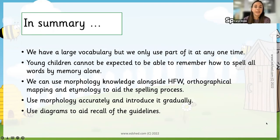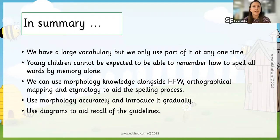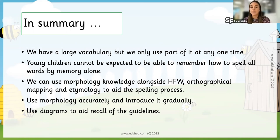In summary: we have a large vocabulary but only use part of it at any one time. Children cannot be expected to remember how to spell all words by memory alone, which is why teaching morphology knowledge alongside high-frequency words, orthographical mapping, and etymology will help the spelling process — and that all starts when children begin learning phonics and splitting words into their GPCs. Make sure we use morphology accurately, introduce it very gradually, and use diagrams to aid recall of the guidelines. I will send out the recording and this PowerPoint too, so you can use those slides if you'd like.